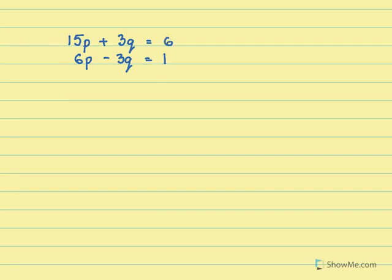And now when I change the sign, I don't need to change the sign here because this cancels off as it is. So I am adding the equations. And when I add the equations I get 21p equals 7. p equals to 7 by 21. p equals 1 by 3.